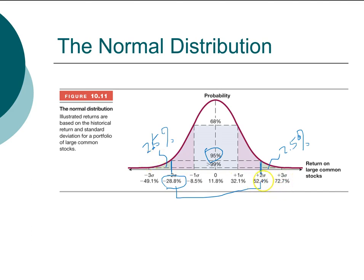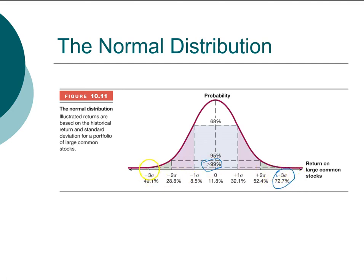If you want to double your money — earn a 100% return — what are the chances of that buying a stock? The answer is very, very low. Because 99% of the time your return will be between plus or minus three standard deviations. That means only 1% of the time will you be outside that boundary, and split across both tails, it's less than half a percent chance that you will earn more than 72.7%. So earning a 100% return in a single year is a very unlikely event.